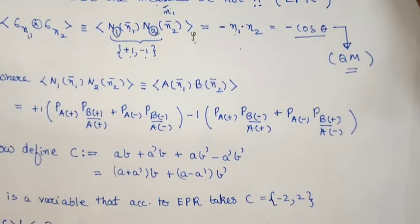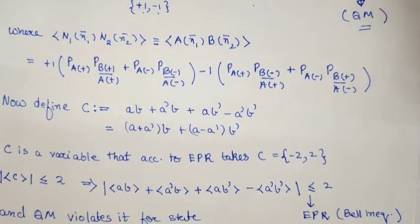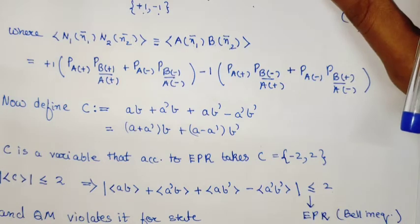In Bell inequalities and in the last video on the coins thought experiment, there were 3 axes involved for each party. Now we try to achieve an inequality using 2 axes: a, a' for Alice and b, b' for Bob.